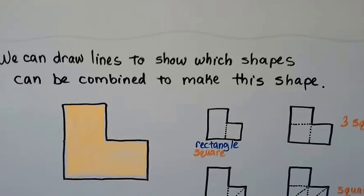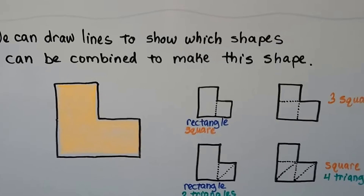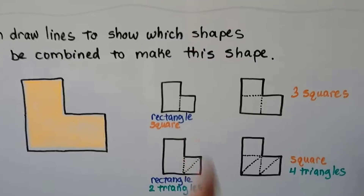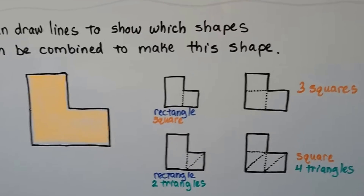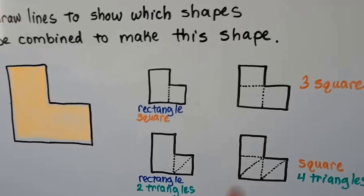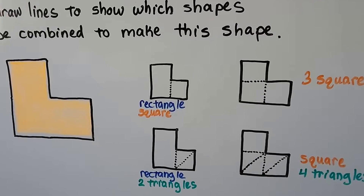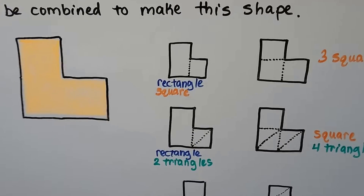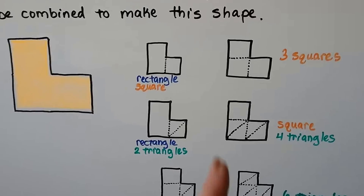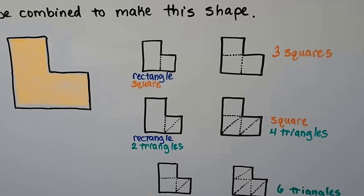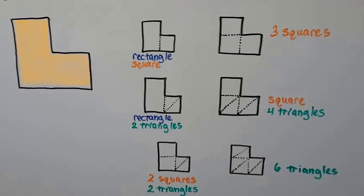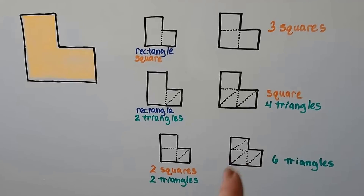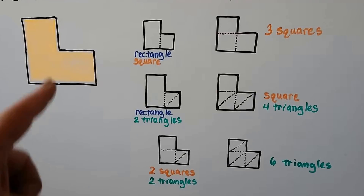We can draw lines to show which shapes can be combined to make a given shape. We could use a rectangle and a square, or make it with three squares, or with a rectangle and two triangles, or with a square and four triangles, or with two squares and two triangles, or even six triangles.